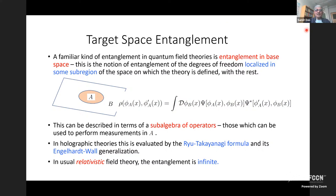The familiar kind of entanglement in quantum field theories is what I'll call entanglement in base space — the entanglement of degrees of freedom localized in some region of space, denoted by A, on which the theory is defined. This can be described in terms of a sub-algebra of operators used to perform measurements in sub-region A. In holographic theories this is evaluated by the Ryu-Takayanagi formula, and in usual relativistic field theory this entanglement is famously infinite because of short-range correlations across the boundary of the region.